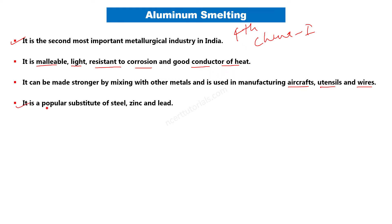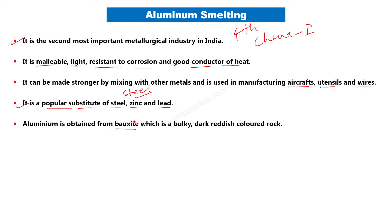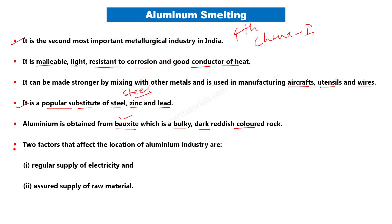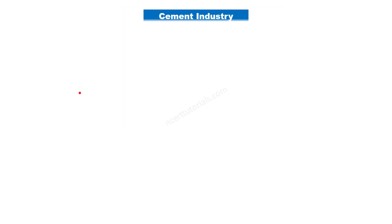Aluminum steel اور tin کا popular substitute ہے۔ Aluminum is obtained from bauxite جو minerals and energy resources میں ہم نے پڑھا تھا۔ Aluminum smelting plant کی industrial location کے لیے بھی iron and steel industry جیسی conditions چاہئیں یعنی regular supply of electricity اور raw materials کی assured supply ضروری ہے۔